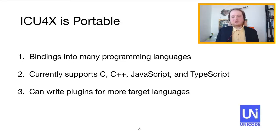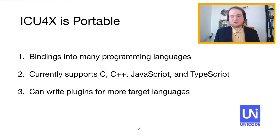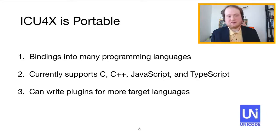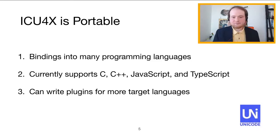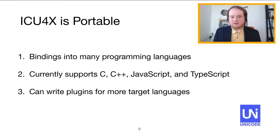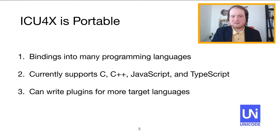The second main value proposition for ICU4X is portability. The X in ICU4X is a nod to this design goal: portability to many different environments. ICU4X has official wrappers in more than one target language. We do this with tooling we've developed that generates idiomatic bindings in many programming languages that encourage i18n best practices. We currently support C and C++ via FFI, or Foreign Function Interface, as well as JavaScript and TypeScript via WebAssembly. Importantly, all of these bindings are easy to maintain, and new programming languages can be added with plugins without needing any additional i18n expertise.